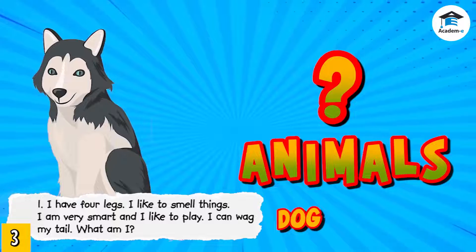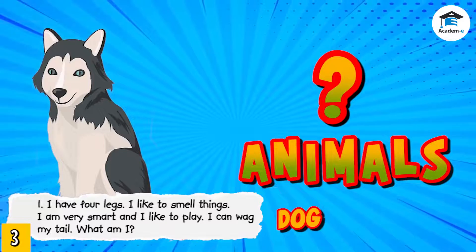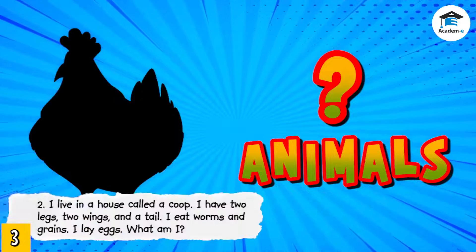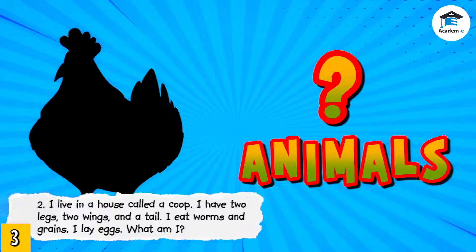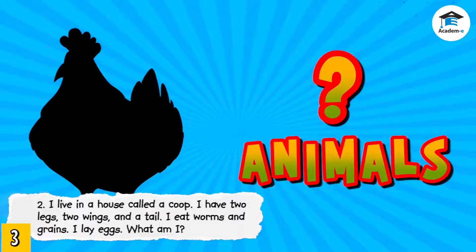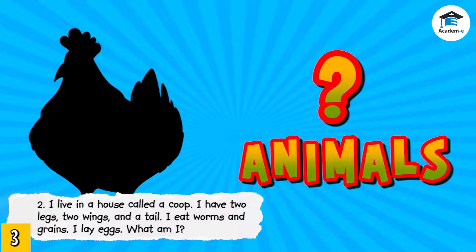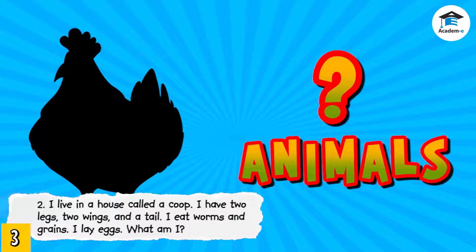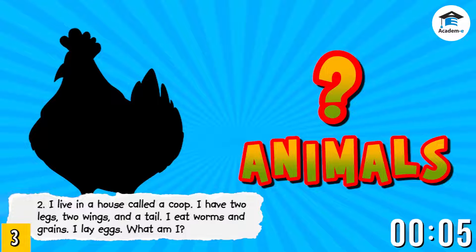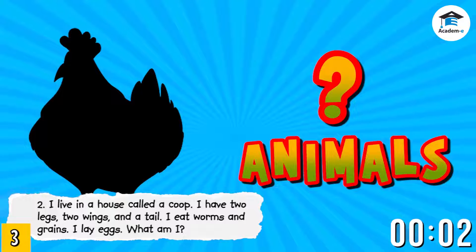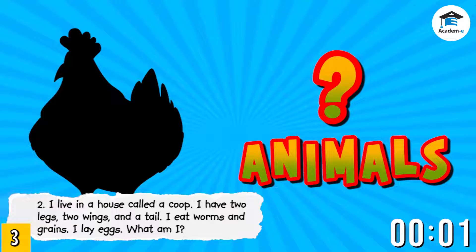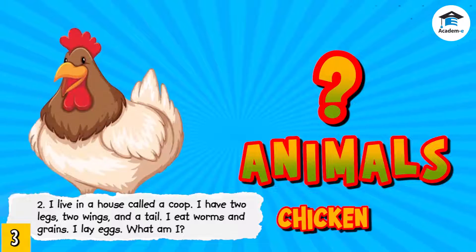Very good! I am a dog. Number two: I live in a house called a coop, I have two legs, two wings, and a tail, I eat worms and grains, I lay eggs. What am I? Very good! I am a chicken.